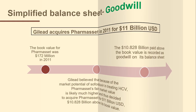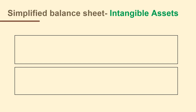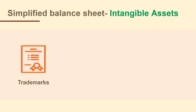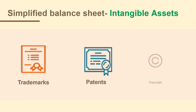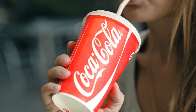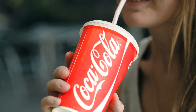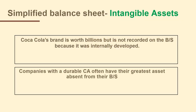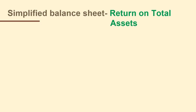Intangible assets are comprised of non-physical acquired assets — meaning the asset must be acquired and not internally developed. Types of intangible assets can include customer lists, franchises, memberships, licenses, patents and technology, trademarks, copyrights, and goodwill. Intangible assets are reduced on the balance sheet via an amortization expense on the income statement. Coca-Cola's brand is worth billions, but it is not recorded on the balance sheet because it was internally developed. So remember this: companies with a durable competitive advantage often have their greatest asset absent from their balance sheet.